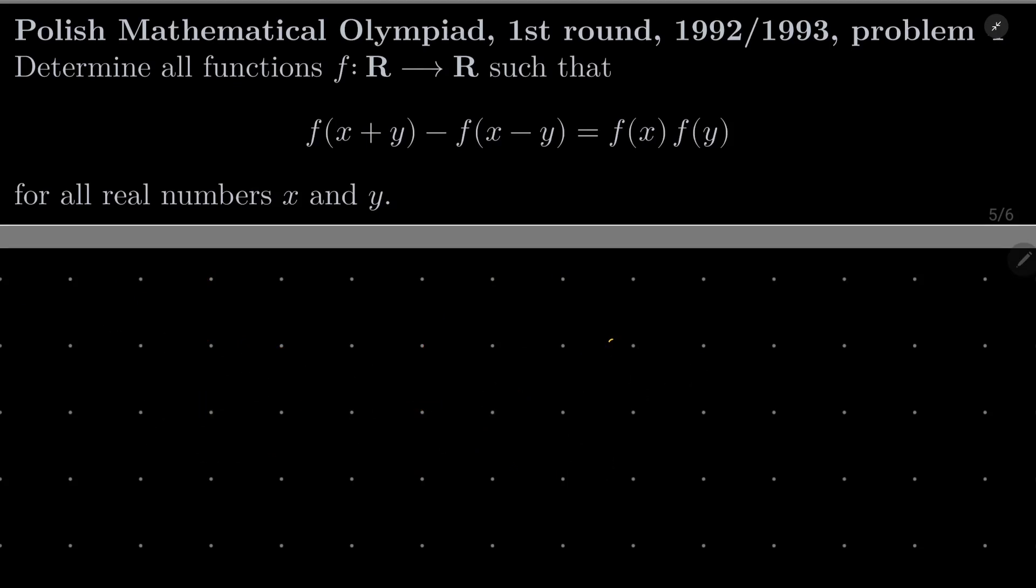Alright, so as I suggested, let's start with setting x and y to be 0. What then? Then, on the left-hand side, we have f(0) - f(0), which is 0, and that equals f(0) squared, which means that f(0) is 0. Let's keep it in mind.